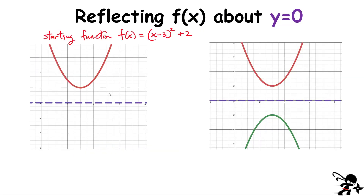I want to start with a pretty straightforward case. We're going to consider a simple function — in this case, a parabola. I have the function here for the parabola, and I want to reflect it about the y equals zero axis of symmetry, which I've denoted here by this purple dashed line. We're going to start with just one single point — this is called the vertex — and its coordinate, reading off the graph, looks like 3 and positive 2.